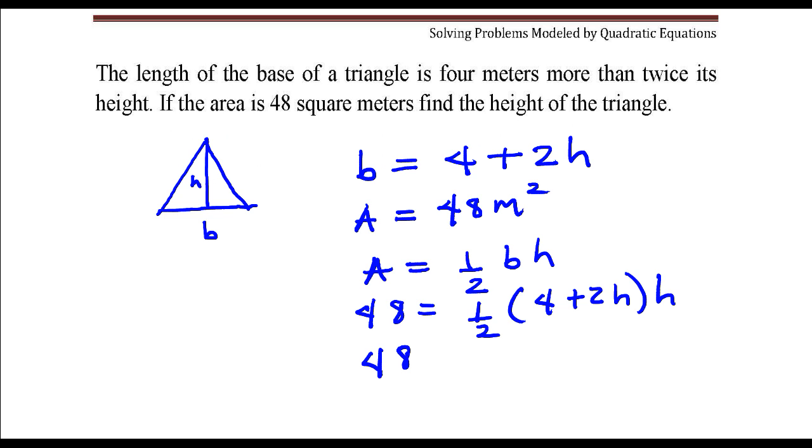On the right hand side of the equal sign I'm going to distribute this 1 half to each term in parentheses. At the same time I'm going to distribute this H to the same two terms. So 1 half times 4, that's 2, times H would be 2H. 1 half times 2H is H times H would be H squared.